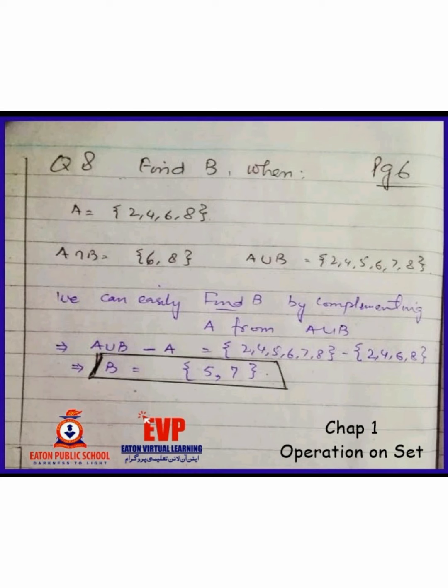Now there is a new question with set A. The intersection and union result will be given and you need to find set B. When we get A union B, remember that A union B means the combination of set A and set B. We take the complement and work out the result. A union B is the combination of the set of A and the set of B. If we remove set A, then obviously what remains is B.